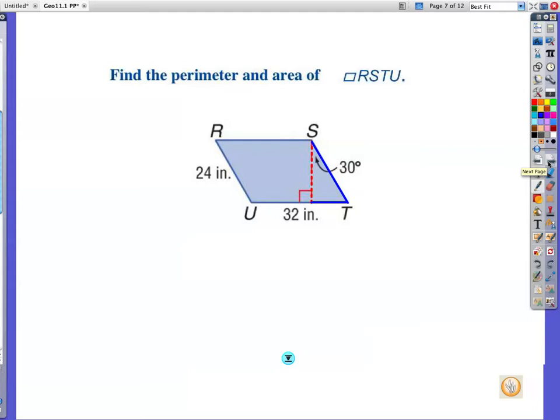Find the perimeter and the area of parallelogram RSTU. Okay, please note, you're going to take your base times your height, but your height is not 24 inches. Everybody thinks, oh, there's 24 on the side, 32 times 24. Oh, no. No, not that easy.